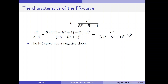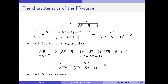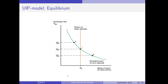What about the shape of this curve — is it concave, convex, or linear? We have to compute the second derivative with respect to FR. When we compute the second derivative, we learn that this relationship is positive, and therefore the FR curve is convex. Now we are able to insert both curves in one diagram: the orange line is the home return curve, the green line is the foreign return curve, and we are able to determine the equilibrium exchange rate level at the intersection of the two curves.